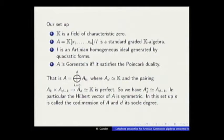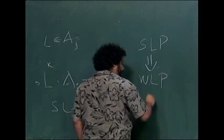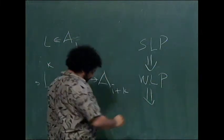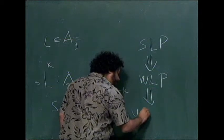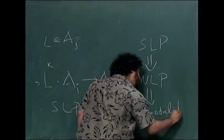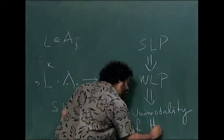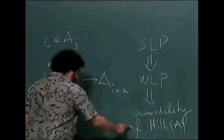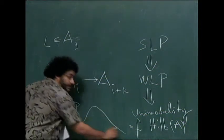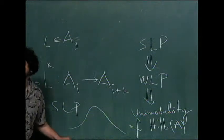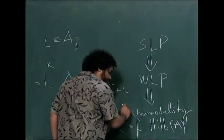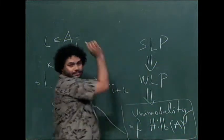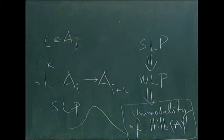Strong Lefschetz property obviously implies weak Lefschetz property, and it's easy to see that it implies unimodality of the Hilbert vector. It means there are no valleys. The Hilbert vector is something like that, unimodal. We showed that this is not true.